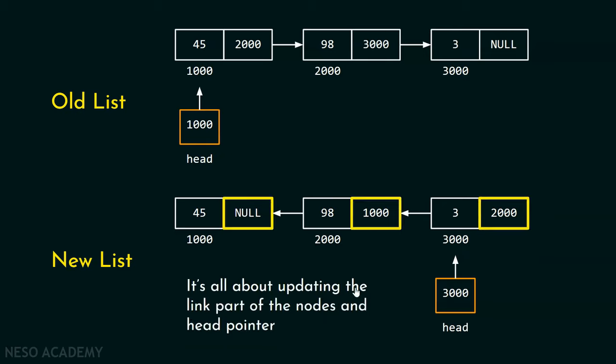It's all about updating the link part of the nodes and the head pointer. By doing this, we will be able to reverse the whole list.